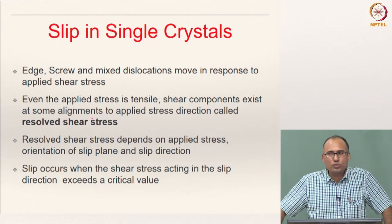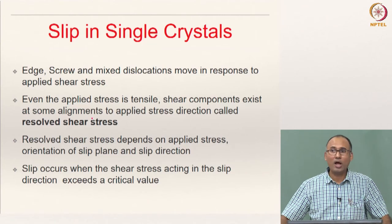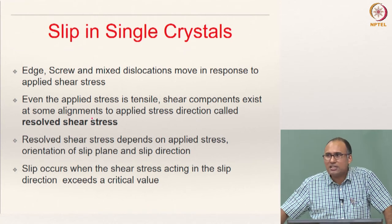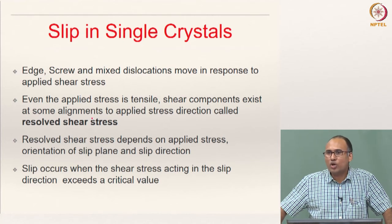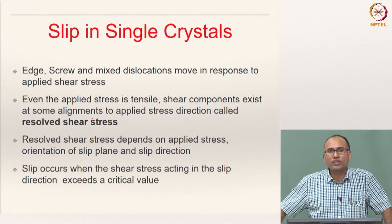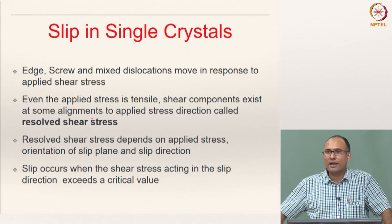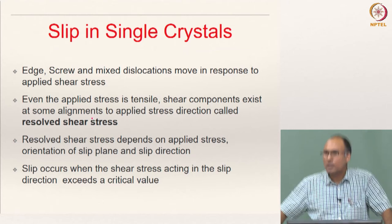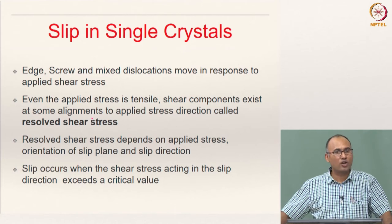Now let us try to understand a little bit more about slip in single crystals. All that we have tried to understand until now is that materials will have line defects called dislocations, and the motion of these dislocations is what we call plastic deformation in crystalline materials. These dislocations, whenever they move in a crystalline lattice, prefer certain planes and certain directions along which they want to move.